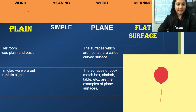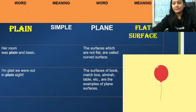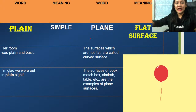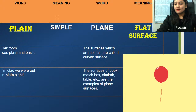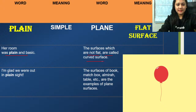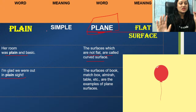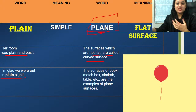Next is 'plain' and 'plane'. PLAIN means simple, not fancy — 'her room was plain and basic' and 'I am glad we are out in plain sight — nothing artificial, pretty original and authentic.' PLANE (P-L-A-N-E) means a flat surface — 'the surfaces which are not flat are called curved surfaces; the flat one is a plane' and 'the surface of a book, matchbox, almirah, table etc. are examples of plane surfaces.'